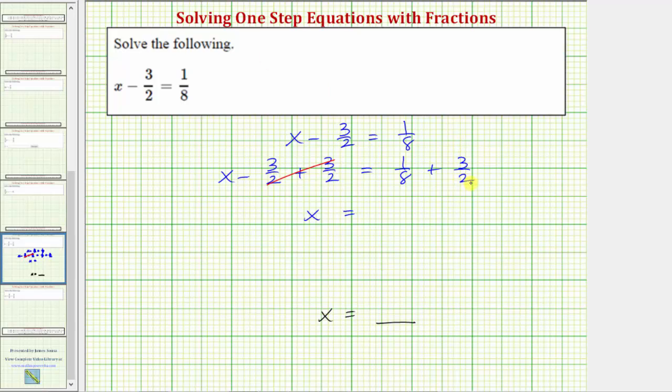Because 4 times 2 equals 8, we'll multiply the numerator and denominator of 3 halves by 4. Now we have x equals 1 eighth plus 12 eighths, and therefore our solution is x equals 13 eighths. When adding fractions with like denominators, the denominator stays the same and we add the numerators. So again our solution is x equals 13 eighths.